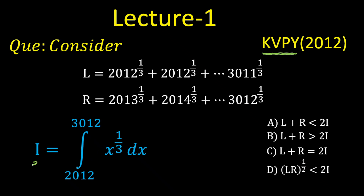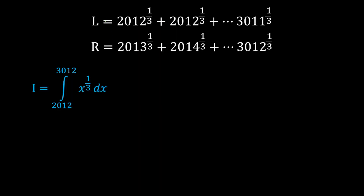Now I can calculate directly. But how do I compare the value of I with L and R? Because in the options, some comparison is given, and I have to find which option is correct. So let's start. We have to compare capital L, capital R, and capital I. Capital L and capital R are written as summations of cube roots of numbers.